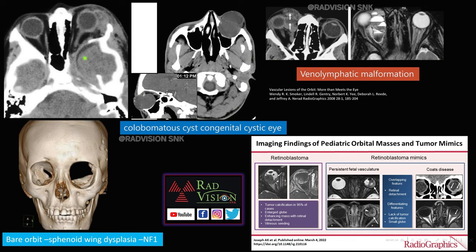Here there is sphenoid wing dysplasia with herniation of the temporal lobe into the orbit causing proptosis. The VRT reconstruction shows a typical bare orbit — the bare orbit with sphenoid wing dysplasia is commonly seen in NF1.